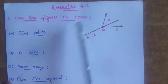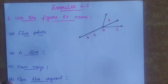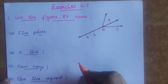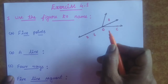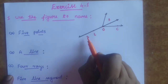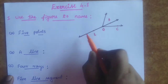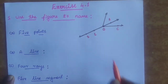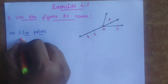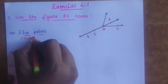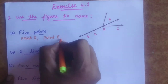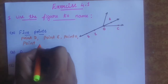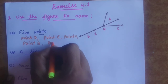They have given one figure, and for this figure we have to name the points they have given. So first: five points. A point is nothing but a dot, and we denote it with letters. So the points are: point D, point E, point O, point B, and point C.